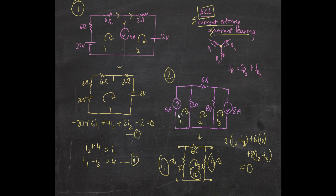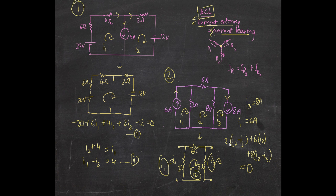Since I₁ is going clockwise and the six-ampere source is also going clockwise, I₁ equals six amperes. And since I₃ is going clockwise and the eight-ampere source arrow also points in that direction, I₃ equals eight amperes. So you don't even need to solve a system — just substitute I₁ and I₃ into the equation. The only unknown left is I₂, which you can then find algebraically.